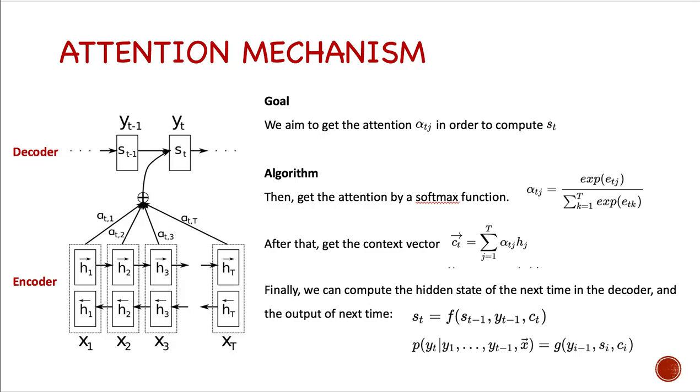After that, we get the context vector through a summation of the alpha. Finally, we can compute the hidden state of the next time in the decoder and also the output.